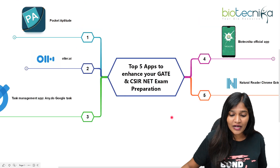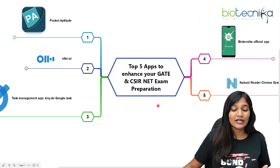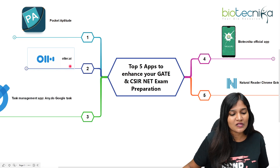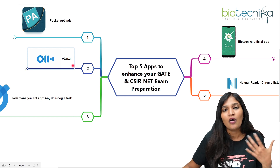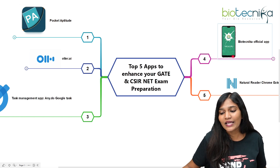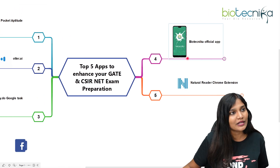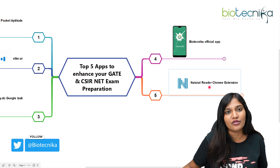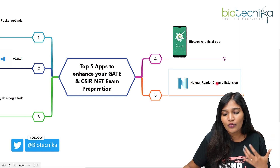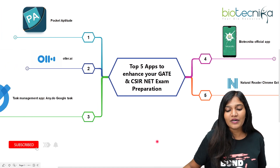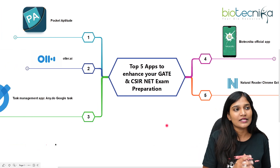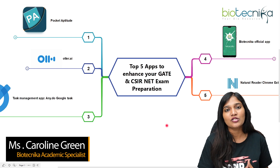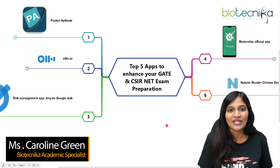So those are the top five apps to enhance your gate and CSAR net exam preparation. First, Pocket Aptitude for practicing aptitude with lots of test options. Second, Otter.ai, which converts your teacher's voice into text notes. Third, Any.do or Google Tasks for assigning and tracking tasks. Fourth, Biotechnica's official app for subject knowledge. And fifth, Natural Reader Chrome extension to read web pages and PDFs out loud for you. What app do you use for gate and CSAR net preparation? Let us know in the comments. Thank you all for joining!